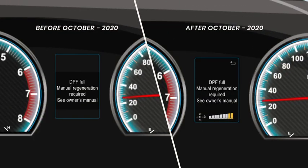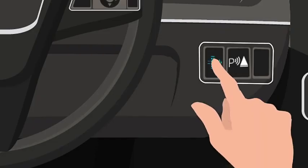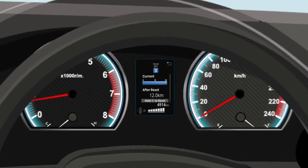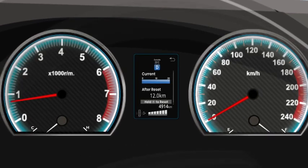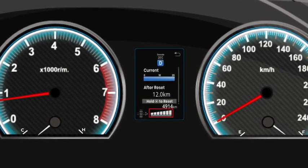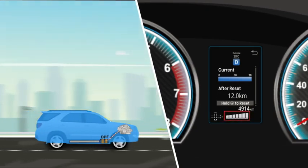For Toyota models manufactured after October 2020, to check the amount of accumulated deposit, press the DPF switch to read the level in the multi-information display. If the number of lines displayed is less than 6, the system tries to auto regenerate when the required conditions are met.